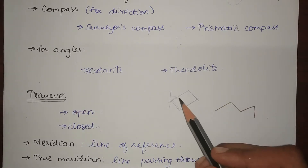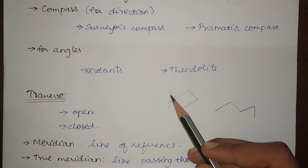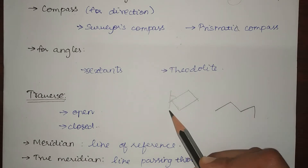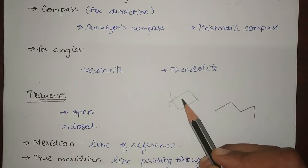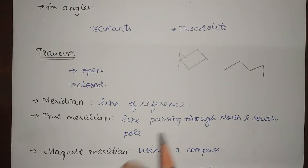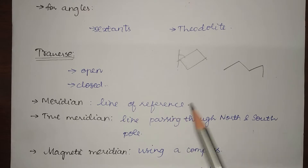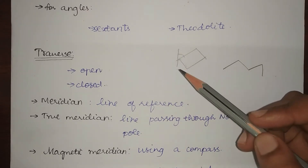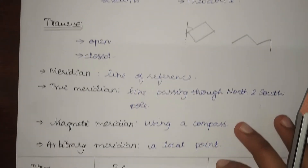You may have noticed that when finding the direction of a line, I draw a vertical reference line and measure the angle with respect to it. That brings us to our next topic: the meridian. A meridian is the line of reference. There are generally three types of meridians.